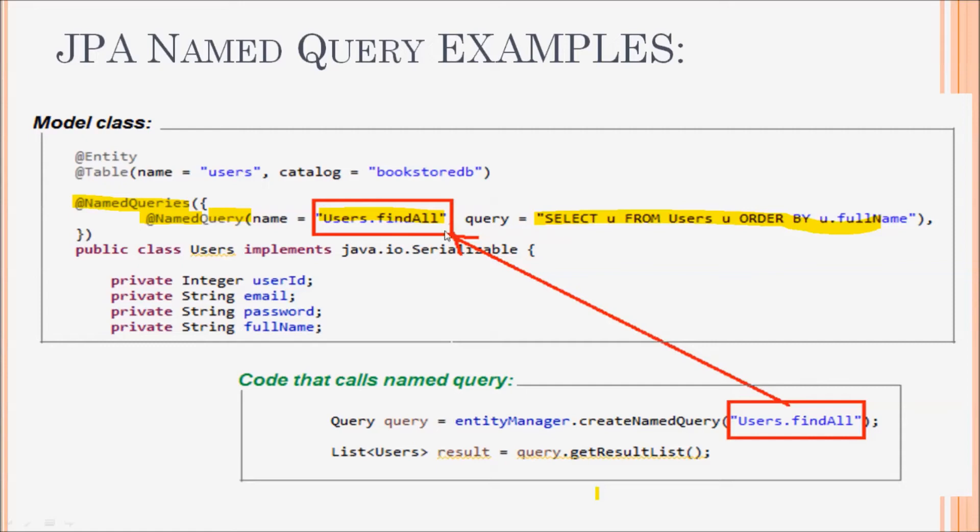So the query can be referred by its name, as shown in the code below. From the entity manager, we create a named query and refer to a named query by its name. This line creates a query object that refers to a query by its name.